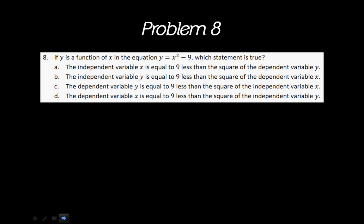The last one is number eight. It says, if y is a function of x in the equation y equals x squared minus 9, which statement is true. And this one is really tricky, because the answer choices all look so similar. It's easy to get tripped up. But I want you to remember that since x is in the equation, it's independent. And since y is at the end of the equation, it's dependent.